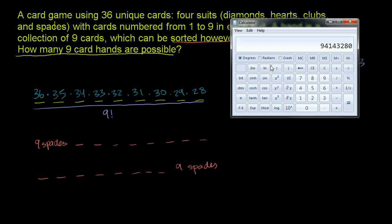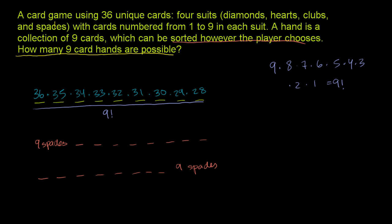And it gave us this number: 94,143,280. So that's the answer for this problem - there are 94,143,280 possible 9-card hands in this situation. Now, we kind of just worked through it, we reasoned our way through it. There is a formula for this that does essentially the exact same thing.